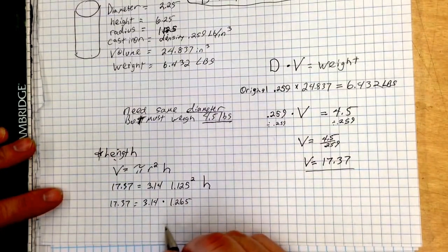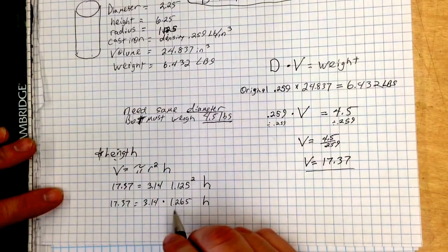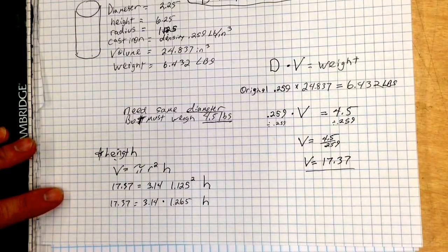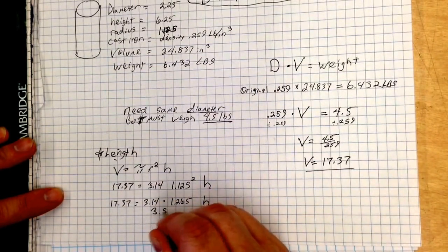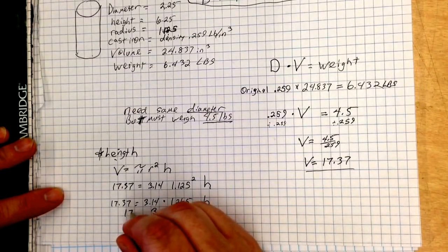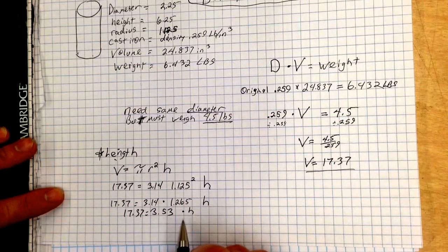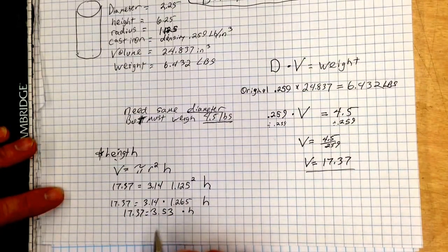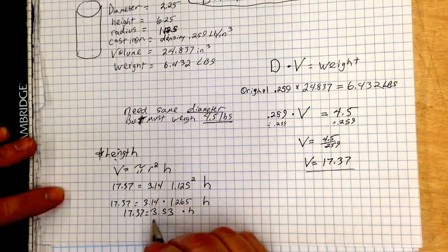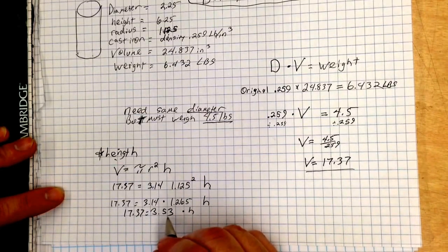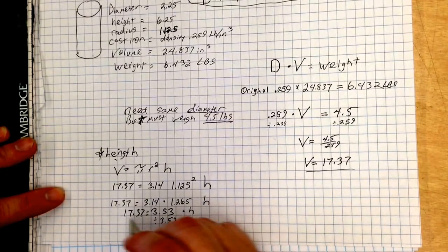We have to multiply that. So, let's multiply. Drop down the h right there. Let's multiply these. So, times 3.14 gives us 3.53. So, you've got 17.37 equals 3.53 times h. Now, all that we have to do is, with a little bit of mathematical stuff, divide by 3.53, so we can get it on just one side.